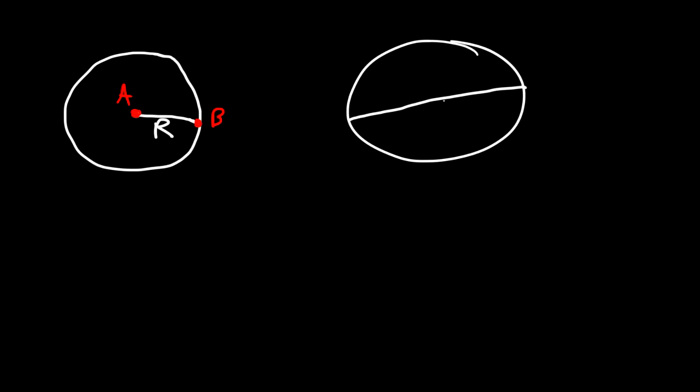This video is an introduction to circles. The radius of a circle is a segment that connects the center of the circle, which we'll call A, to any point on a circle, so segment AB represents the radius. The diameter passes through the center of the circle and it's twice the length of the radius. This is the diameter — let's call this ABC, so segment ABC is the diameter of the circle.